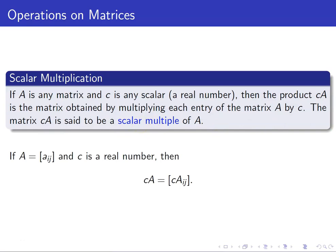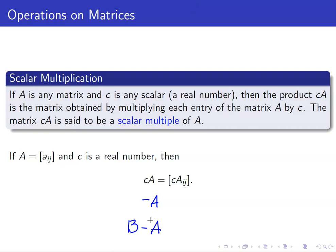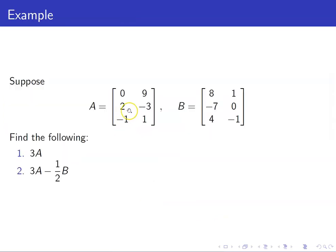Mathematically speaking, if A is this matrix whose i,j entries are denoted by a_ij and c is a real number, then the scalar multiple c times A is a matrix whose i,j entry is equal to c times a_ij. Take note that we can now define the matrix negative A — we just multiply all of the entries of A by negative 1. Hence, we can now define the difference of two matrices B minus A as simply matrix addition of B and negative A.